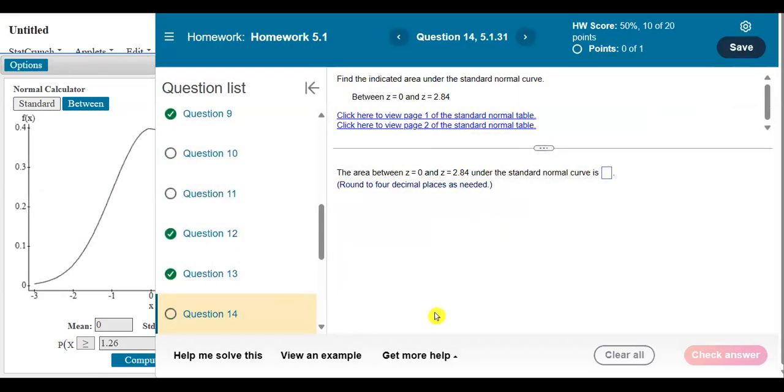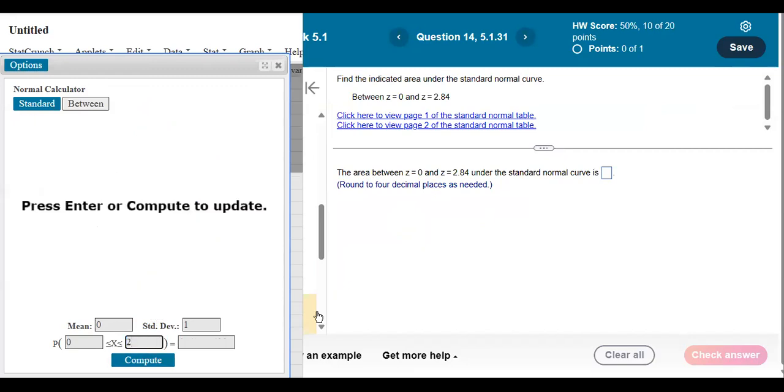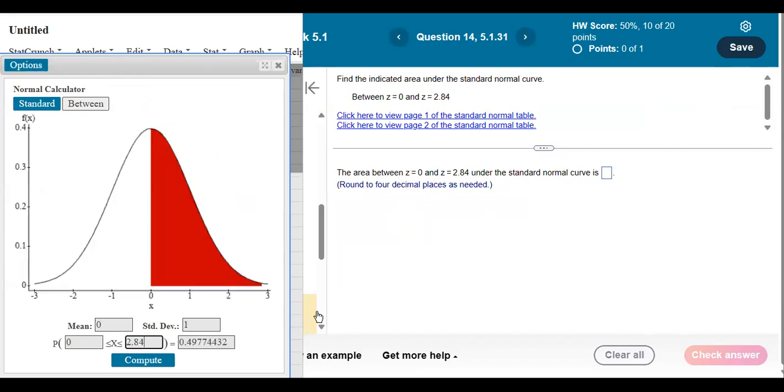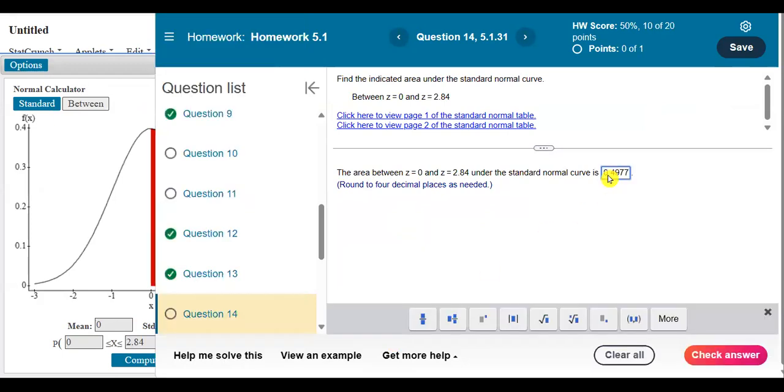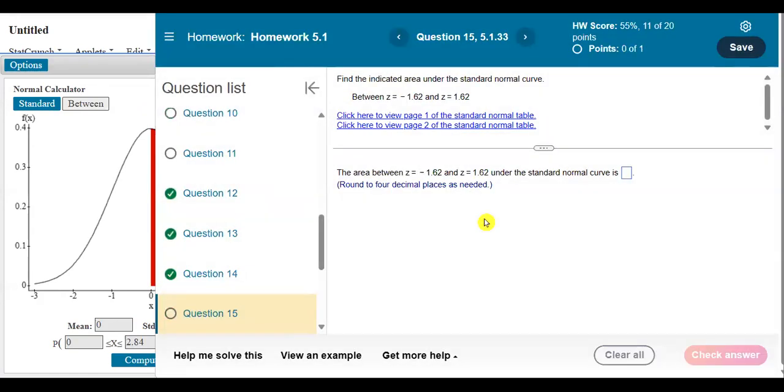And let's do one more for the heck of it. So this one is a between. It looks like it says the area between z of 0 and z of 2.84. So make sure you go back to the between. And you just type in the two z-scores you're given. Smaller one first. Bigger one second. Usually they're given to you in that order. So just keep them in the order they're given to you. Looks like our area is right there. And I'm just copying and pasting. Because why not?